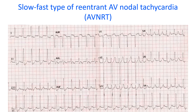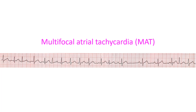In those with dual AV nodal physiology, an appropriately timed supraventricular ectopic will find the fast pathway refractory and conduct down the slow pathway. When it reaches the lower end, if the fast pathway has recovered, it conducts back, initiating a slow-fast type of reentrant AV nodal tachycardia. Supraventricular ectopics can also arise in multiple foci.